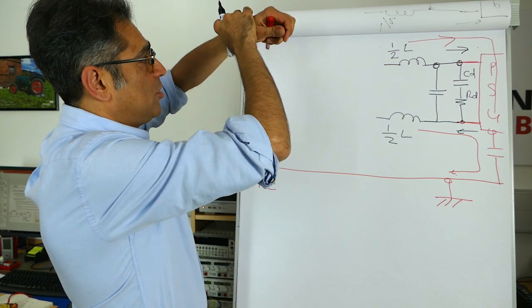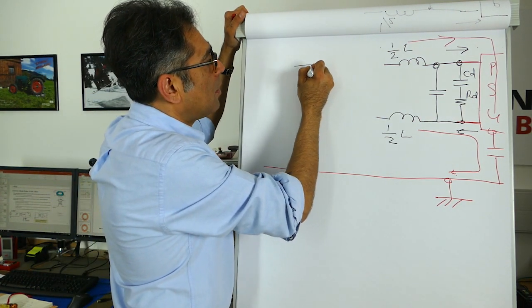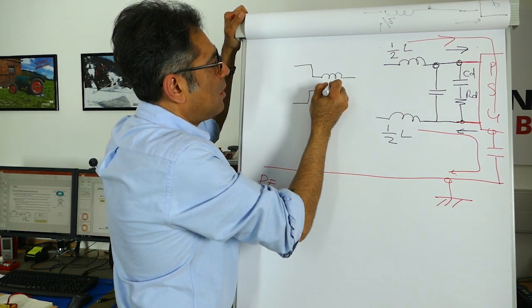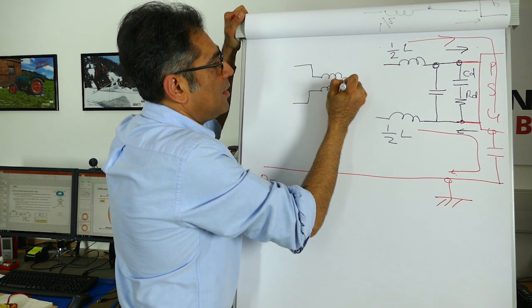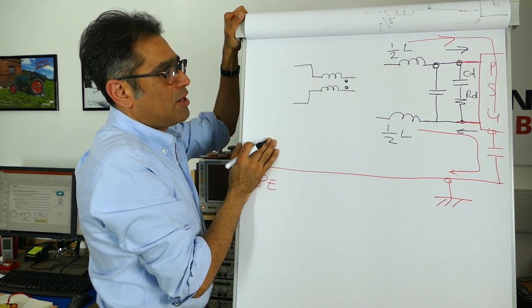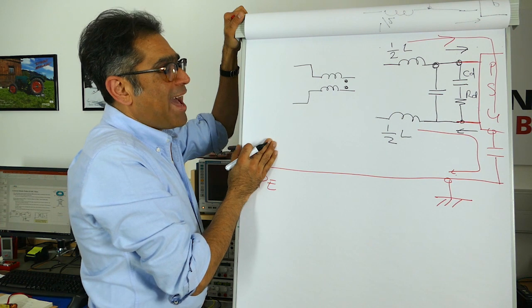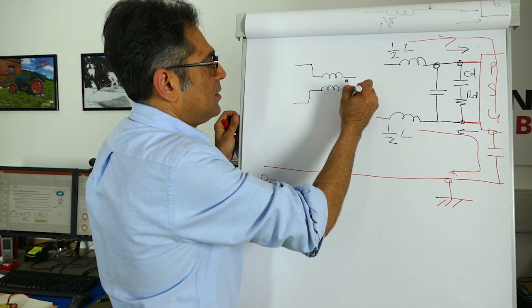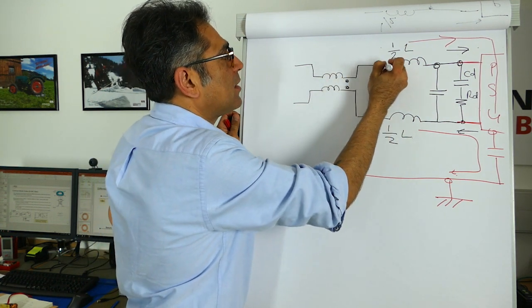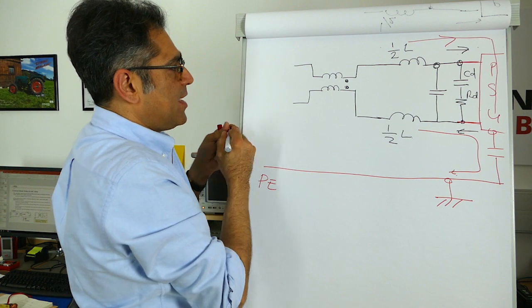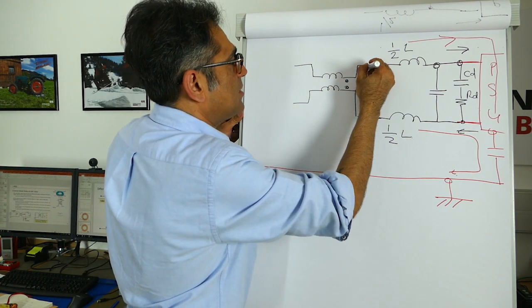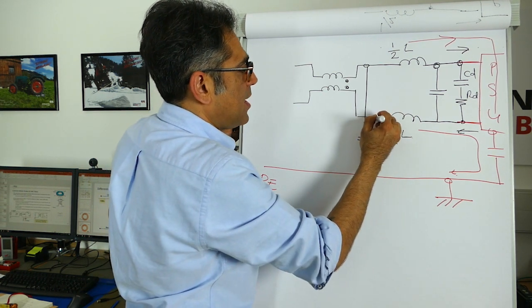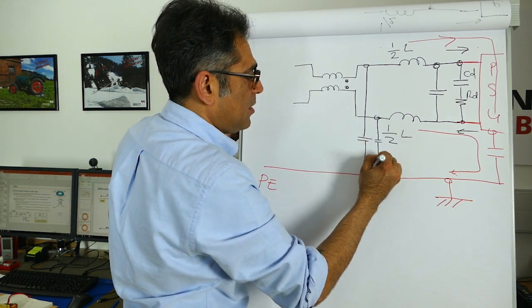It's usually drawn like so. The dot notation shows that it's a common mode choke and the C has to be with respect to the chassis. So what happens next? That goes to there, that goes to there, and then I need some capacitance with respect to chassis which goes from there to there and from there to there.